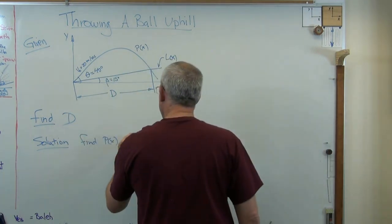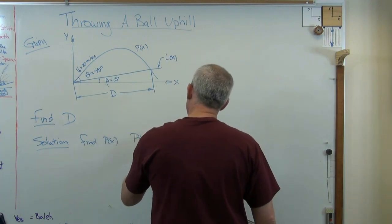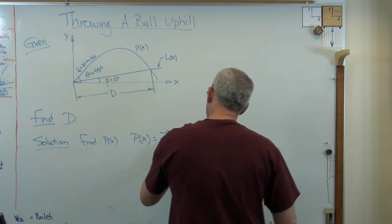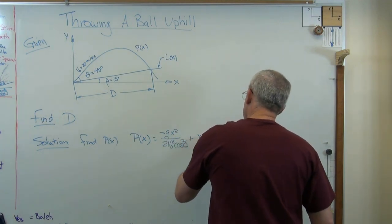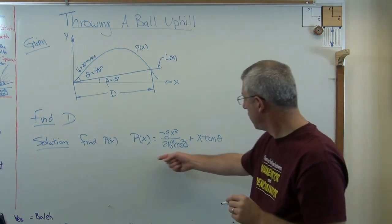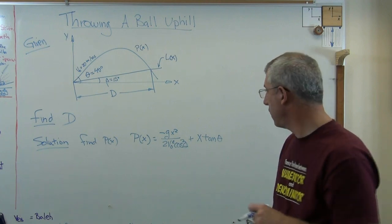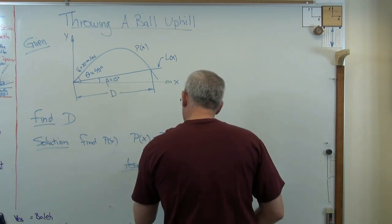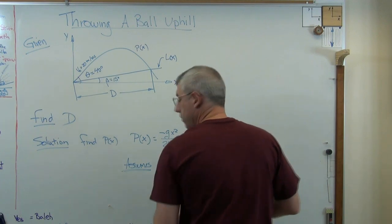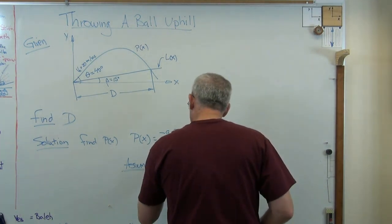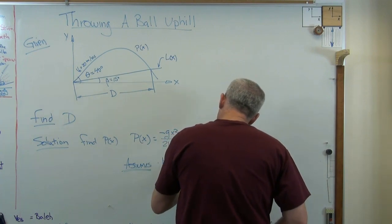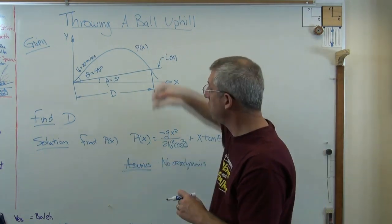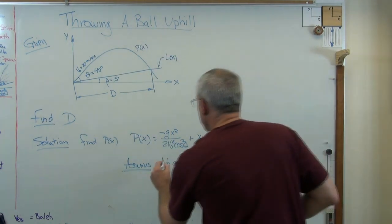I've done this a few times before in other videos. P of x is going to be: minus g x squared over 2 v0 squared cosine squared theta, plus x tangent theta. If you need to know where that comes from, go back and check out one of the other videos. Now this assumes: number one, no aerodynamics — there are no aerodynamic forces, so there are no forces in the horizontal direction. The only forces are in the vertical direction due to gravity.